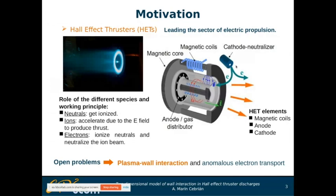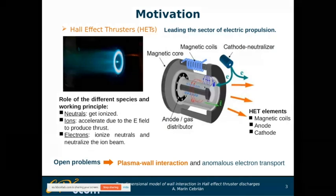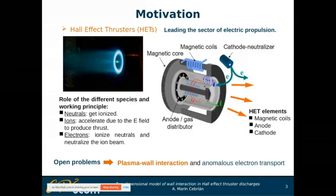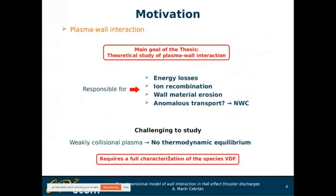Ions have a dual role: they have to neutralize the ion beam and ionize the neutrals within the chamber. This technology is very well known and widely used, but there are still some open problems. The two most important ones are plasma wall interaction and anomalous transport. I will be covering plasma wall interaction and my colleague Enrique is going to cover anomalous electron transport.